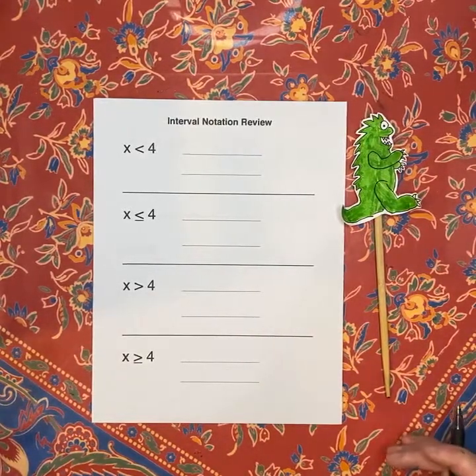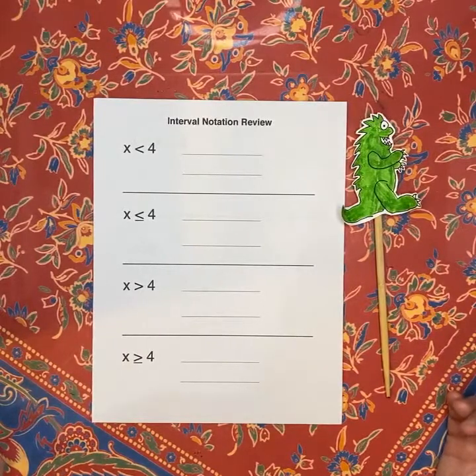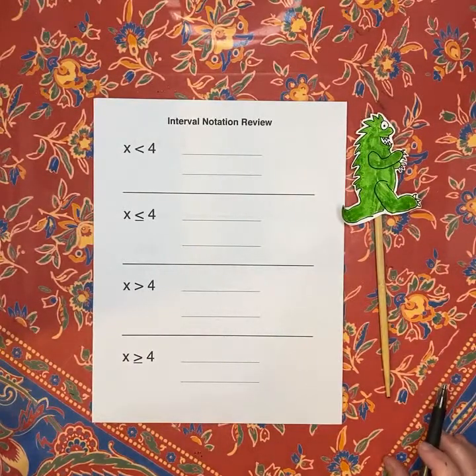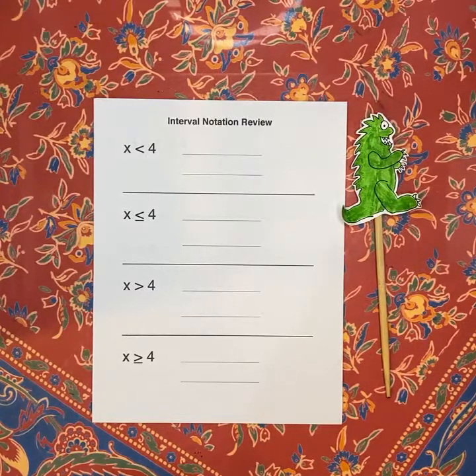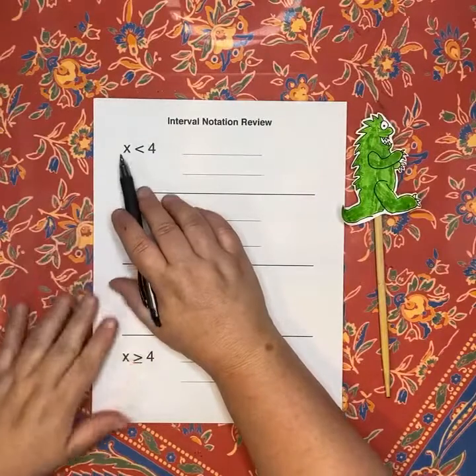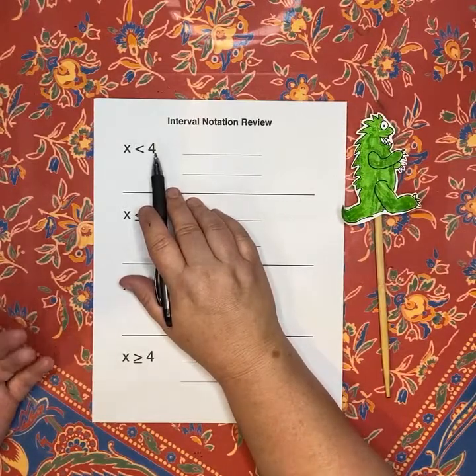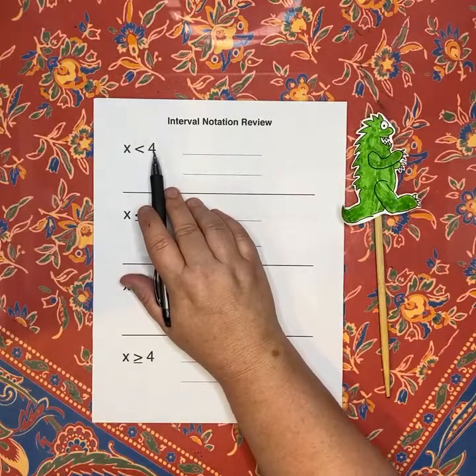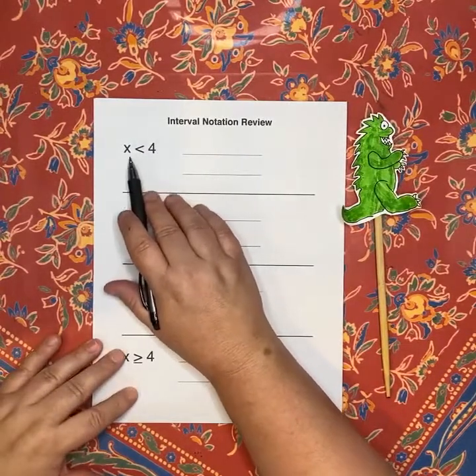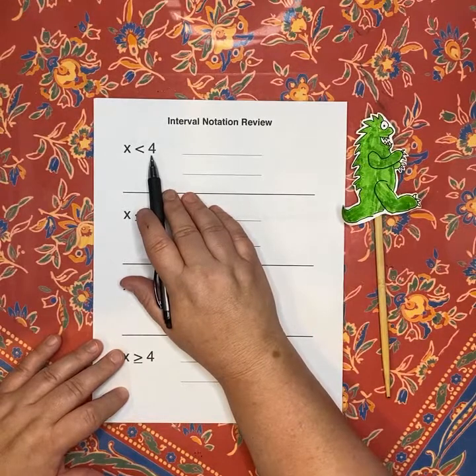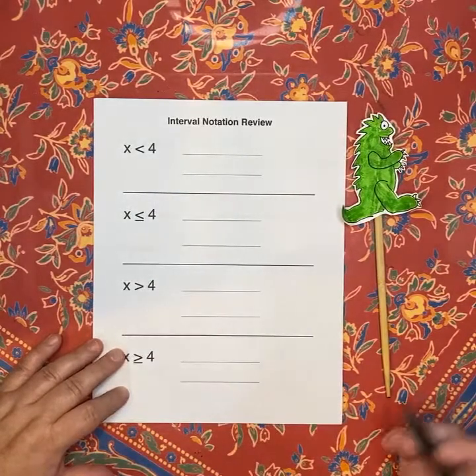We're going to talk about how to write answers in terms of intervals. So the first thing is what the heck is an interval? Basically what we're talking about when we talk about intervals is rather than having a single number, like x equals 12, we're talking about a range of numbers. For example, x is less than four. Now there are a bunch of numbers that are less than four. Three is less than four. Zero is less than four. Negative 400,536,007 is less than four. So there are a ton of answers. Trying to write them all out individually really would take literally forever.